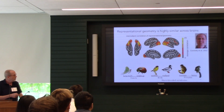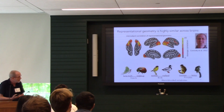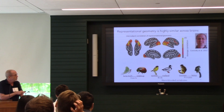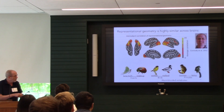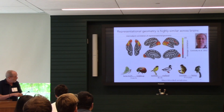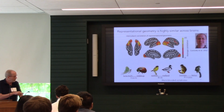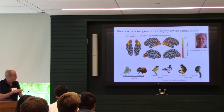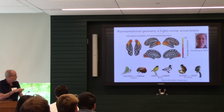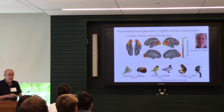Why bring up representational geometry as the basis for information representation? We know that representational geometry is highly similar across brains. From a study Andy Connolly published in 2012, he looked at responses to six different types of animals — two species of insect, two of bird, two of primate — and calculated the representational geometry for this six-category space in each subject. In occipital cortex, lateral occipital cortex, and ventral temporal cortex, the between-subjects correlation is very high, around 0.85. This is really conserved across subjects.